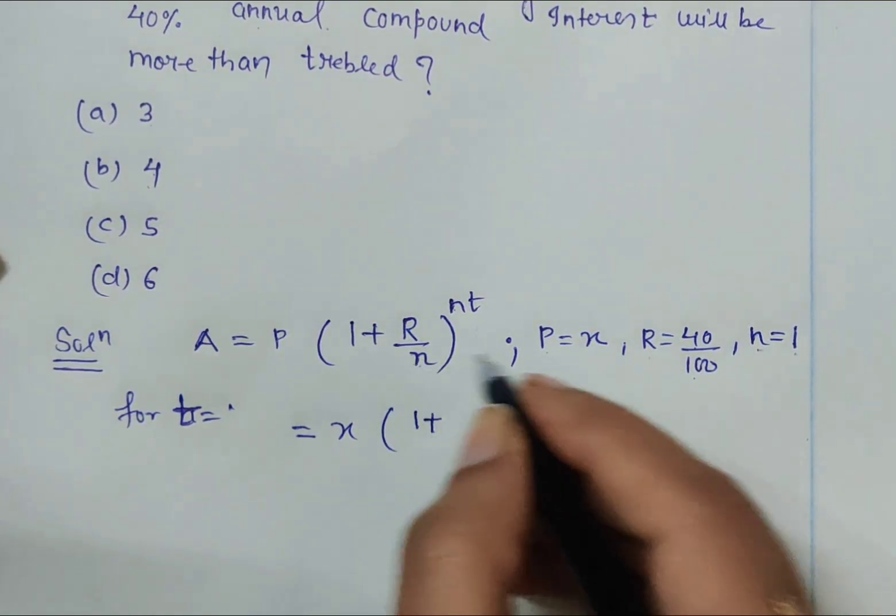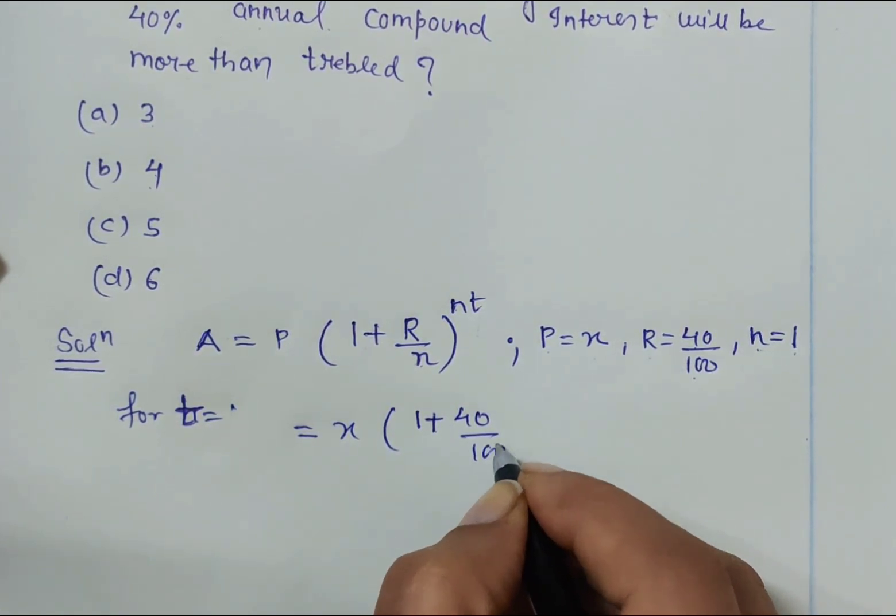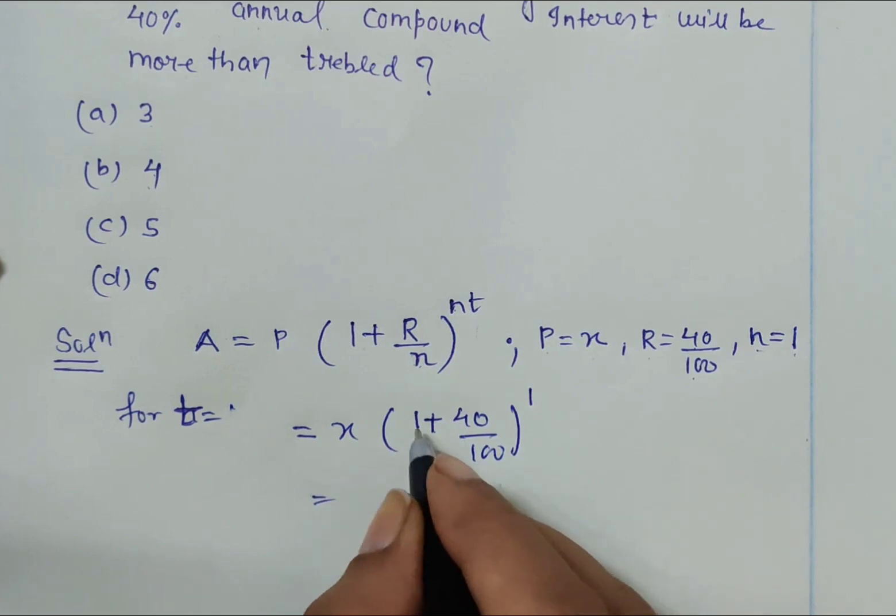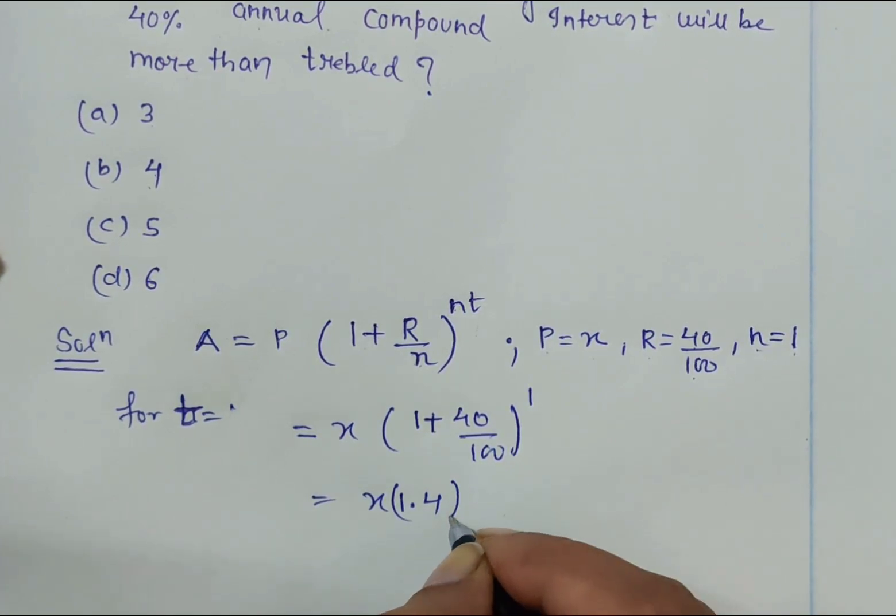For t = 1, the amount would be x times (1 + 40/100)^1. Once we calculate, 100 + 40 = 140 upon 100 is 1.4, so x times 1.4 at the end of first year.